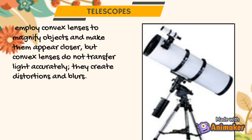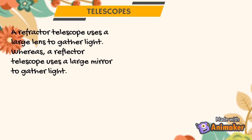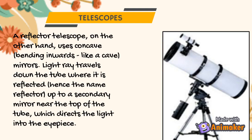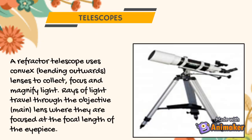Next, we have telescopes. These employ convex lenses to magnify objects and make them appear closer, but convex lenses can create distortions and blurs. A refractor telescope uses a large lens to gather light, whereas a reflector telescope uses a large mirror to gather light. Each has its own advantage — the refractor is better for observing planets and the moon, while the reflector is better for deep sky objects such as galaxies. A reflector telescope uses concave mirrors: light travels down the tube, is reflected up to a secondary mirror near the top, which directs the light into the eyepiece. A refractor telescope uses convex lenses to collect, focus, and magnify light, with rays traveling through the objective lens and focused at the focal length of the eyepiece.